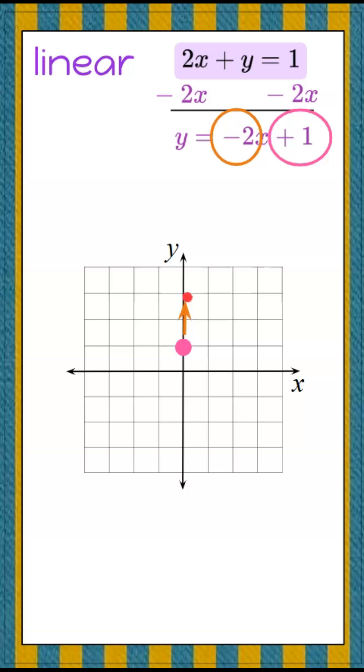I'm going to rise 2 and run negative 1 to plot a point, and I'm going to rise negative 2 and run positive 1, and now I have another point and there's my line. Now we've graphed the line 2x plus y equals 1.